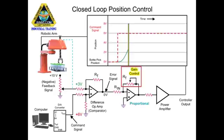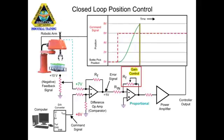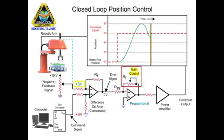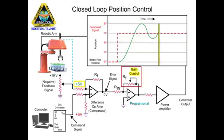Increasing the gain of the op-amp has a disadvantage where the robotic arm overshoots the targeted position. When this occurs, the feedback signal is greater than the command signal. The op-amp reacts by changing the polarity from positive to negative, which results in reverse rotation of the arm motor to go back to the desired position. With high gain, the overshoot is repeated again in the opposite direction until the robotic arm motor stabilizes.